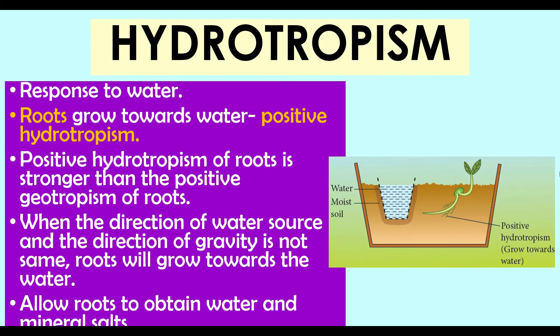The third is hydrotropism — the response of plants towards water. Roots show positive hydrotropism, growing towards the direction of water. This allows roots to obtain water for photosynthesis and absorb dissolved mineral salts to stay alive. This response is often stronger than the response to gravity.